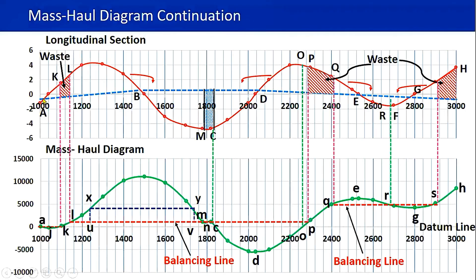After this particular point, the existing level goes above the design level. This is the existing level and the design level is well below the existing level, so here you can clearly see there's a cut. At this point again the design level and the existing level meet, and now the existing level goes below the design level — the design level is well above the existing level — and here again they meet each other.